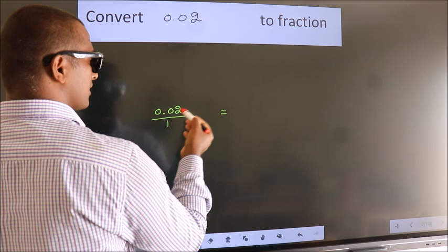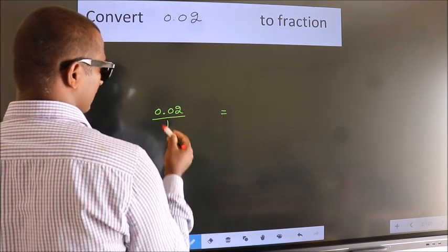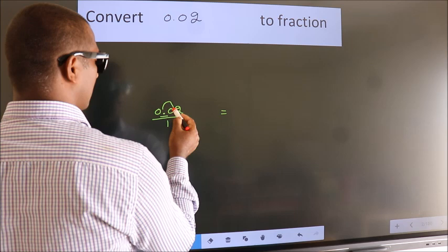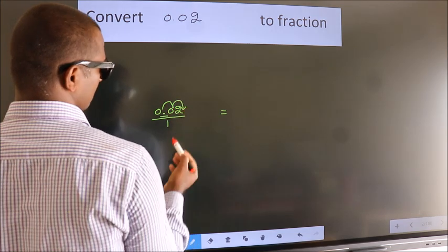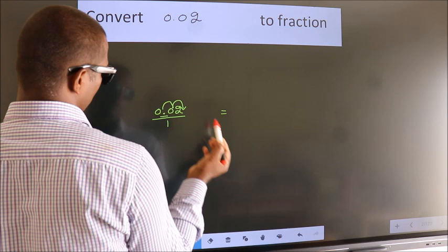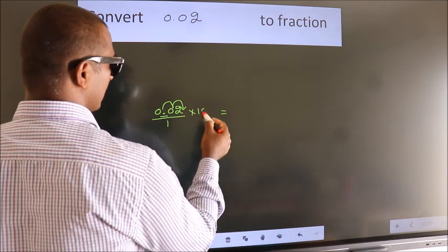To convert this to fraction, we have to move this decimal after 2 numbers. To move this decimal after 2 numbers, we should multiply it with 100.